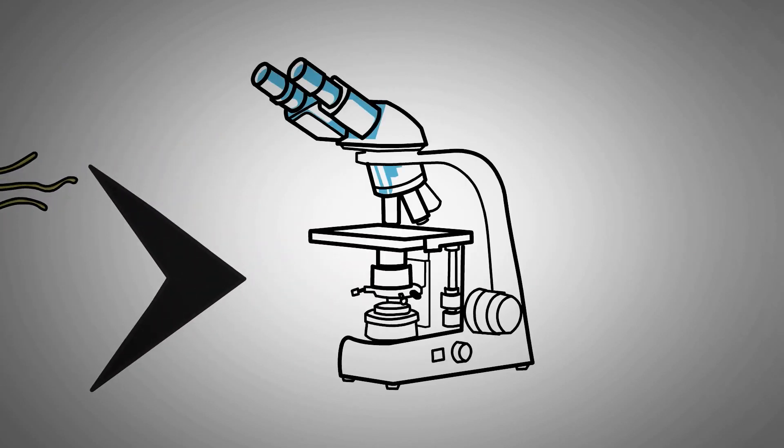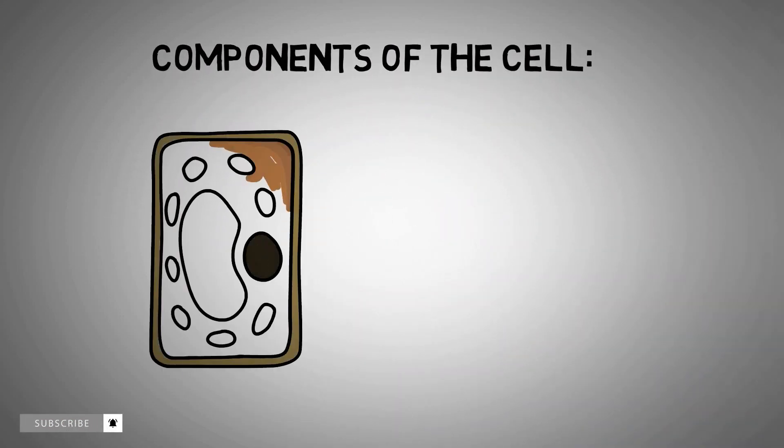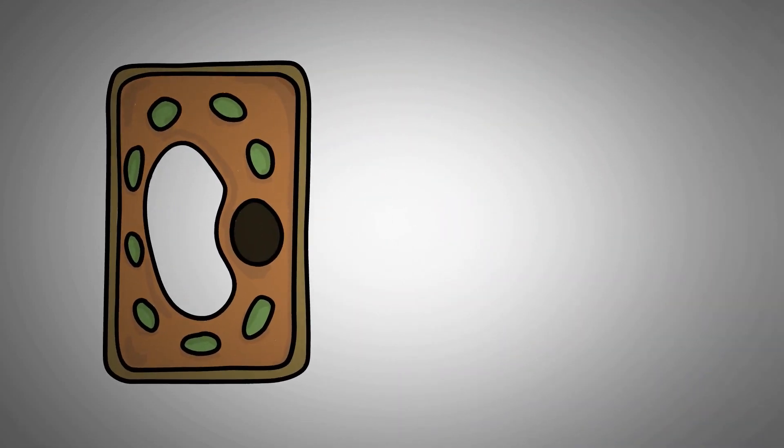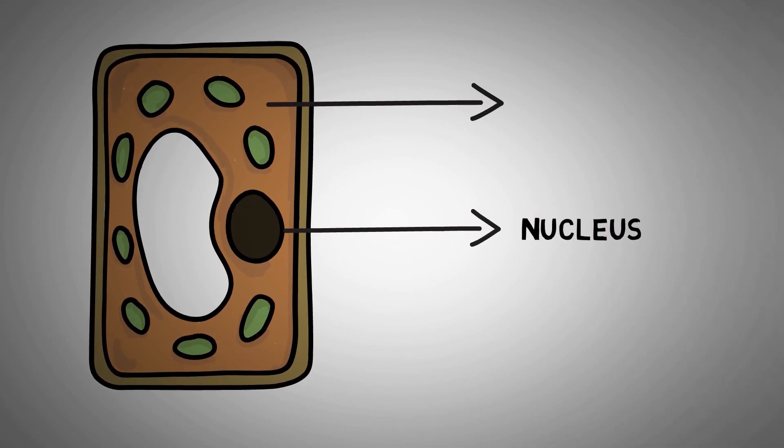They are seen with the help of microscope. Components of the cell: Cell consists of three major components. These are nucleus, cytoplasm, and outer layers.